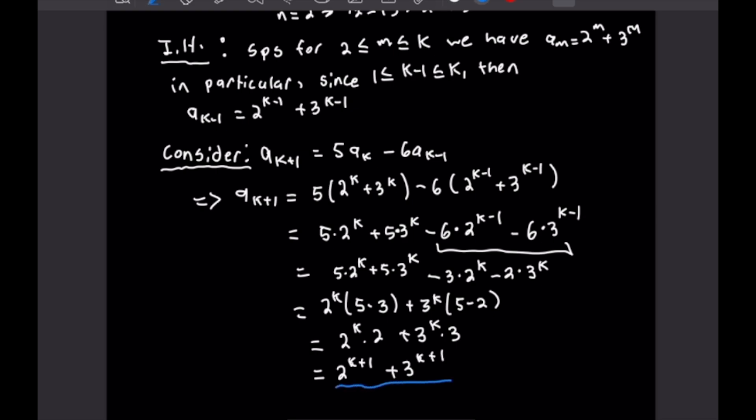We can see that this is exactly what we wanted to prove. We have proved the K+1 case and completed the induction step, which completes this proof by strong induction. That finishes this last proof off, and that's a good place to stop.